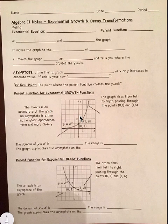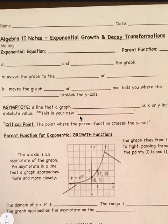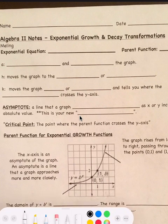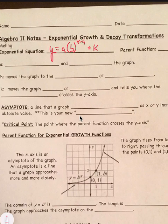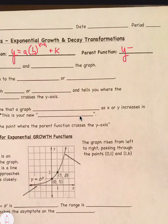We're continuing on with exponential growth and decay. Today we're talking about transformations of exponential growth and decay. The exponential general equation is y equals a in parentheses b raised to the x minus h power, all of it plus k. So we're bringing back our h's and k's. And then the parent function is just y equals b raised to the x power.